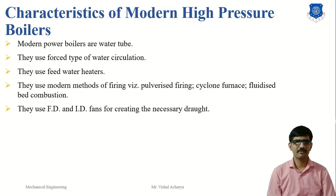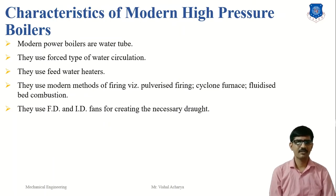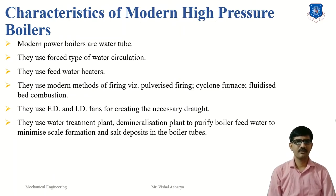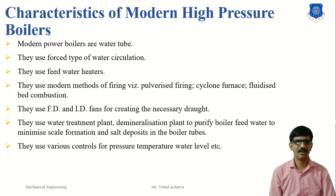They use FD and ID fans — meaning forced draft and induced draft fans — for creating the necessary draft. So the circulation of the air and the exhausting of fuel gases is very efficiently managed. Feed water treatment is used so that the corrosion of the boiler is prevented by the use of the feed water treatment plant.